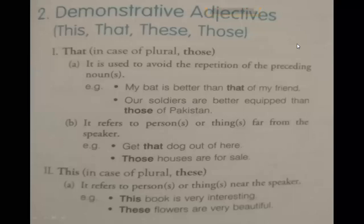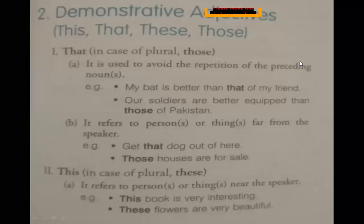'That' refers to a person or thing far from the speaker — far away. For example: 'Get that dog out of here' — pointing to something at a distance. 'This' refers to something near the speaker. For example: 'This is a very interesting book' — referring to something near, that's why 'this' is used as a determiner. 'These flowers are very beautiful' — 'these' here is referring to the flowers.